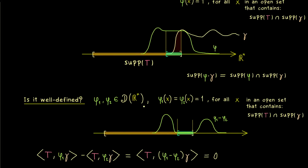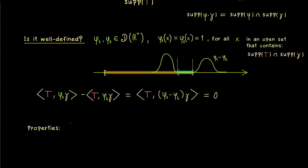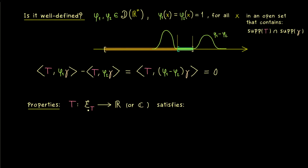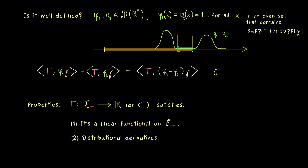Now the question is: what are the properties of this new definition? Is it still useful for our theory? Since we have extended the distribution, we can now see T as a map defined on E_T, with values still in the real or complex numbers. A distribution was a linear map on the test functions, and the good thing is we don't lose that property — we now have a linear functional defined on the vector space E_T. We don't lose the important linearity. In addition, another important property for distributions was that we could deal with derivatives — specifically distributional partial derivatives, which form distributions again. This means that d_alpha T as a distribution can be extended to the same space E_T.